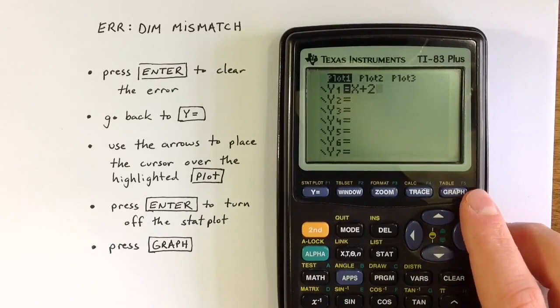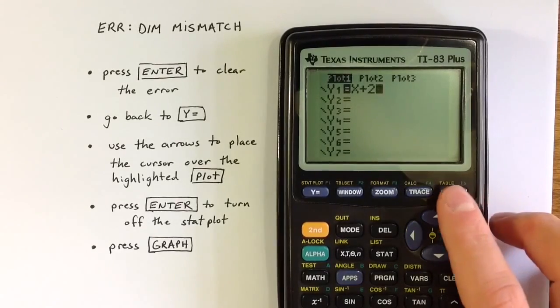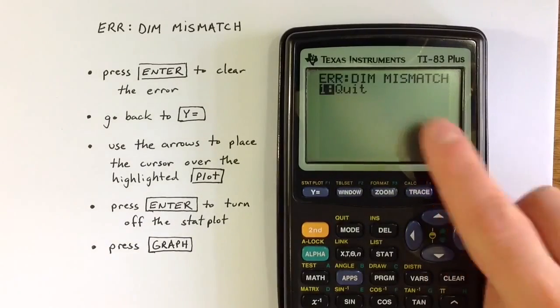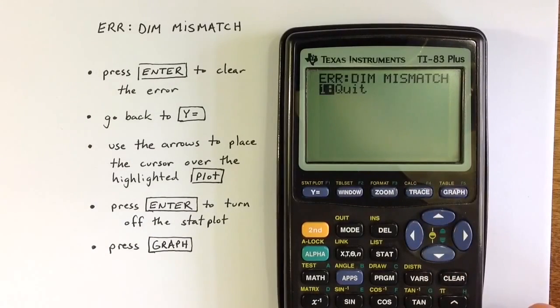If you're trying to create a graph on a TI-83 graphing calculator and when you press the graph key you see the error dimension mismatch, it probably means that a stat plot needs to be turned off.